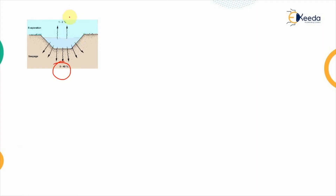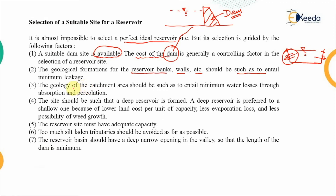The site selected should also minimize evaporation losses. The geology of the catchment area - the geographical features present in the area - should entail minimum water losses through absorption and percolation. The water absorbed by the surrounding side walls should be minimum, and seepage losses should also be minimum. This factor regarding absorption is different from the previous one about fissures and cracks in the geological rocks.